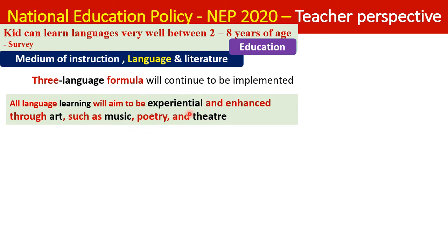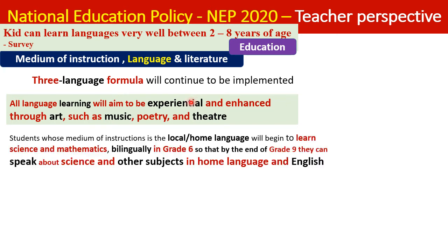Languages are to be learned through experiential methods — singing, poetry, theater, and art — not by imposition. From Grade 6, students studying in their mother tongue must also study Mathematics and Science bilingually in both the local language and English. By Grade 9, all students should be able to speak science and other subjects in both their mother tongue and English.